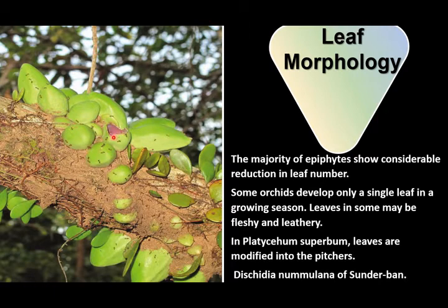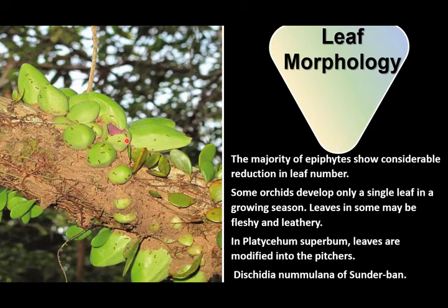Here you can see one of the pitchers cut open to reveal the inner structure, showing the network of roots absorbing all the nutrients inside. This plant has a symbiotic relationship with ants — myrmecophily, a symbiotic association between ants and the plant, is a very common occurrence in most epiphytic vegetation. Sometimes ants and insects enter into the cavity of the pitcher through the hole, where they are killed and digested. The dead remains of the animals serve as a nitrogen source for the plant.